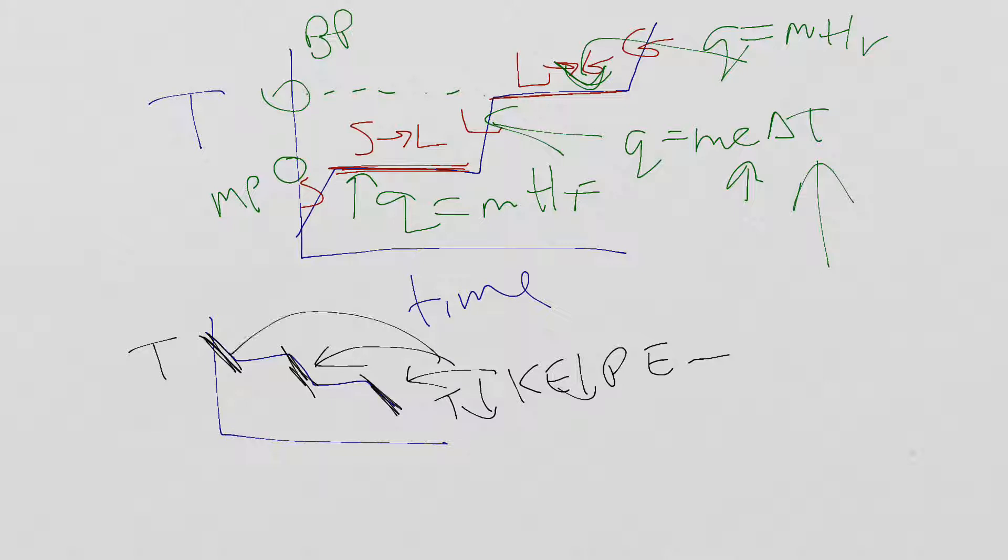At these places when I'm at a plateau and we have phase changes going on, then we say temperature remains constant. That means kinetic energy remains constant and it's the potential energy now that's changing. In a cooling curve, it's going down.